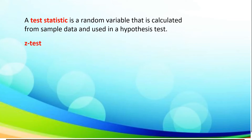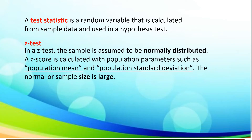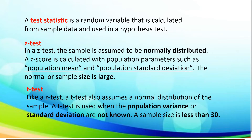We have different kinds of tests. The first one is z-test. In a z-test, the sample is assumed to be normally distributed. A z-score is calculated with population parameters such as population mean and population standard deviation, and the sample size is large. While in t-test, like a z-test, a t-test also assumes a normal distribution of the sample. A t-test is used when the population variance or standard deviation are not known, and the sample size is less than 30.